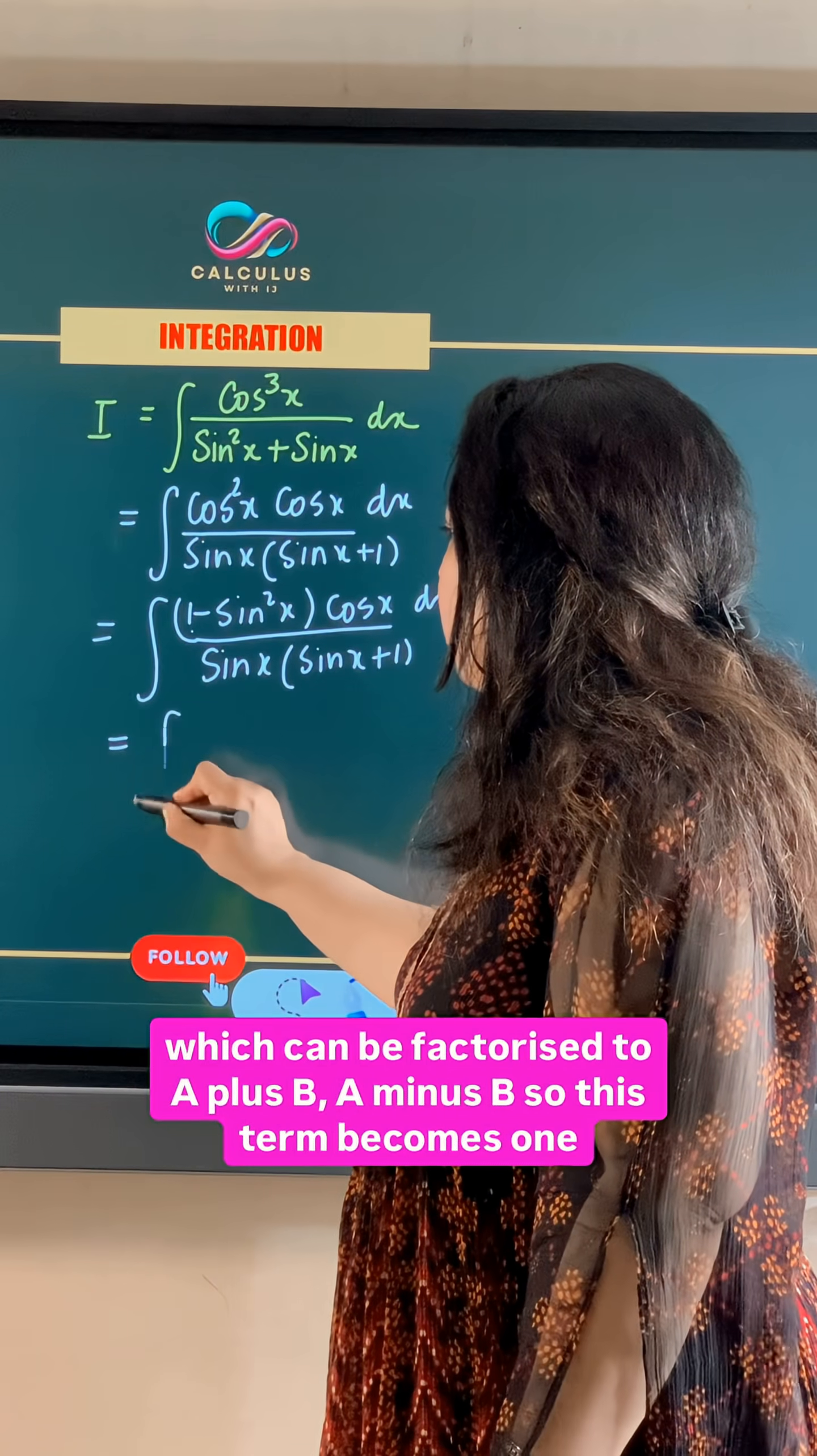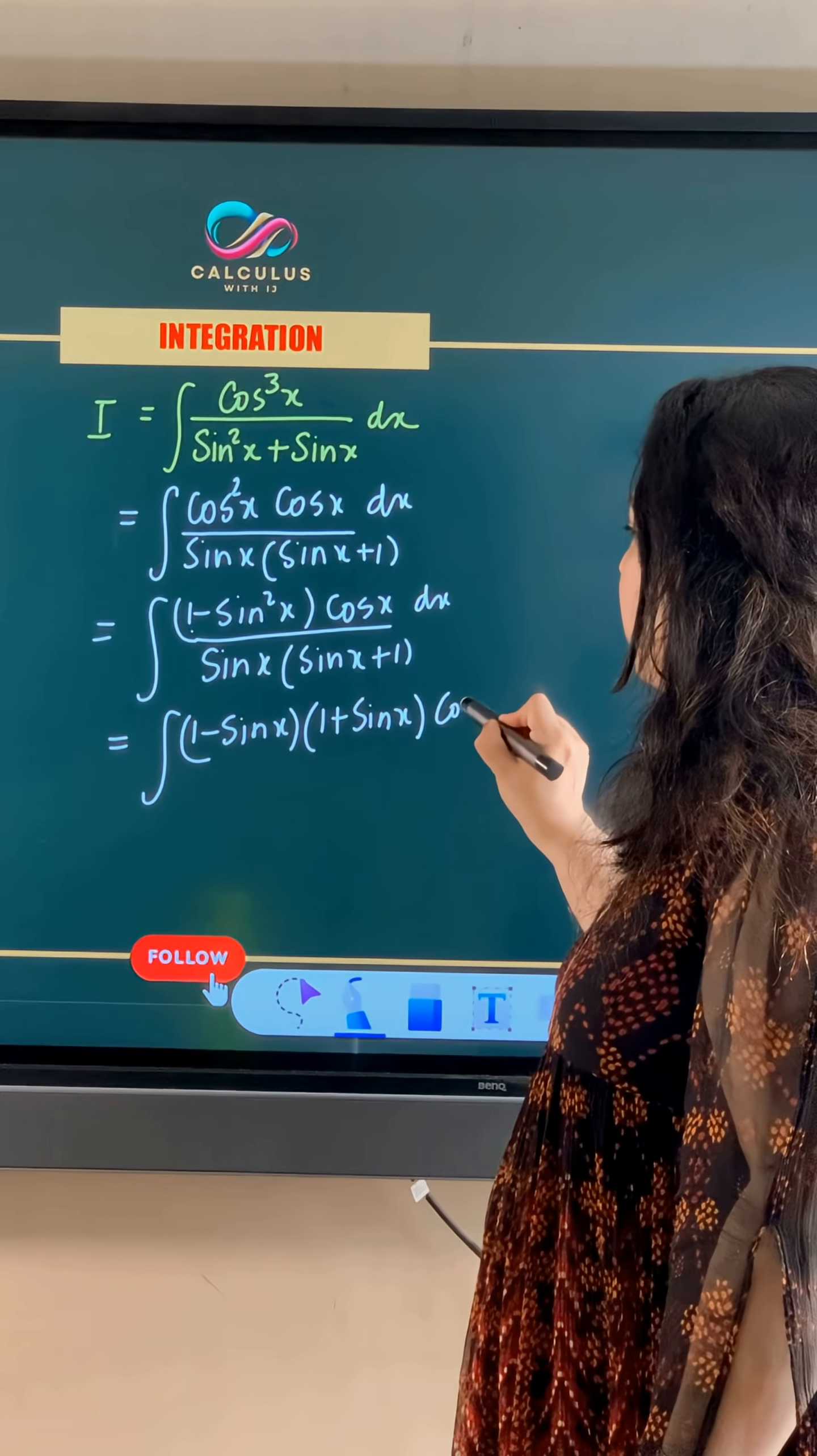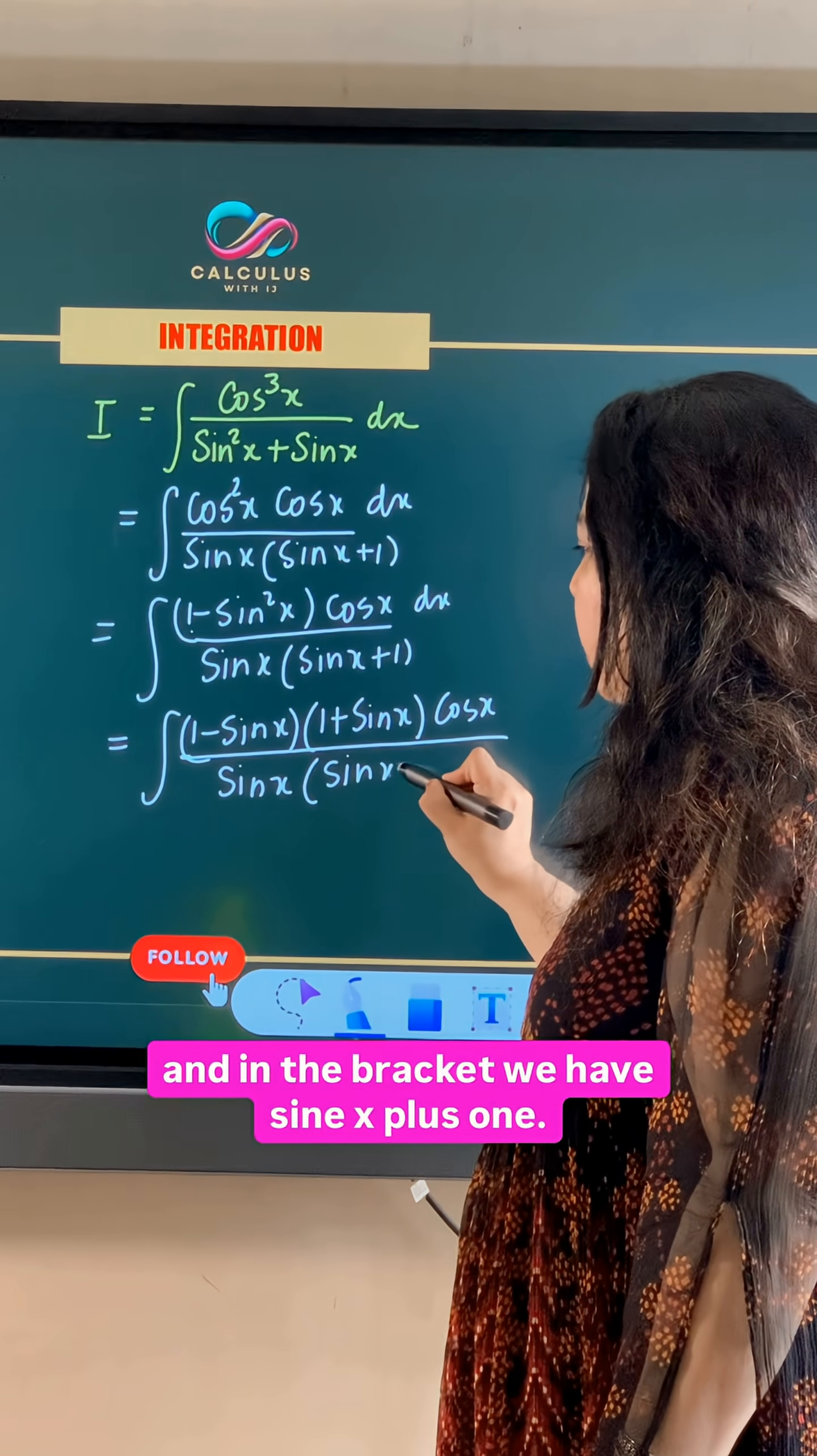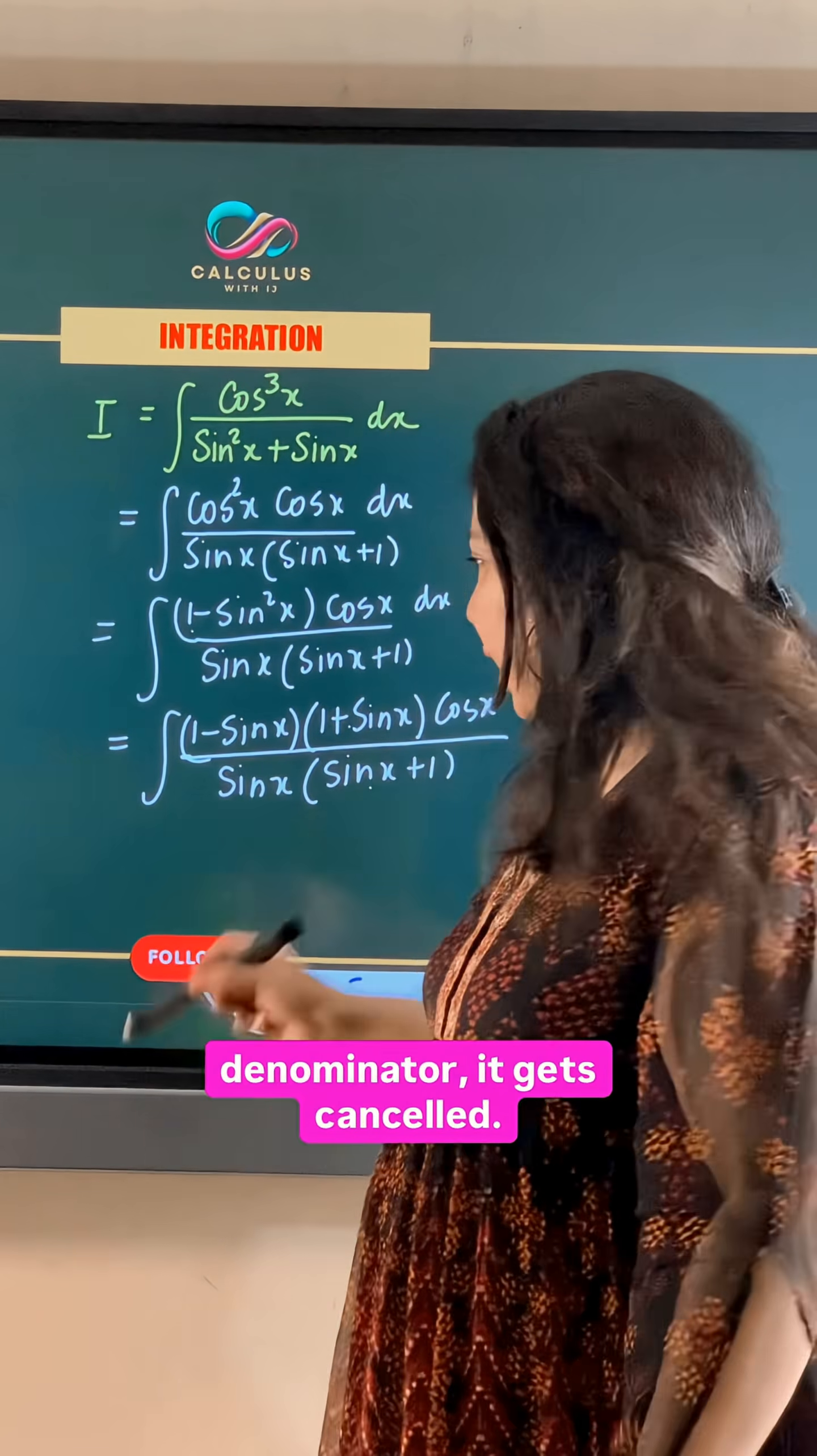So this term becomes 1 minus sin x into 1 plus sin x, cos x divided by sin x, and in the bracket we have sin x plus 1. Now sin x plus 1 bracket is there in the numerator as well as in the denominator, it gets cancelled.